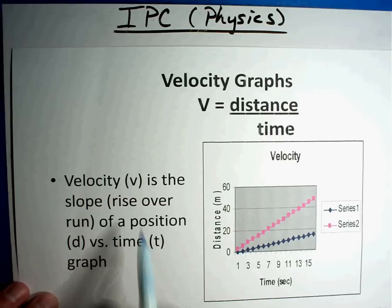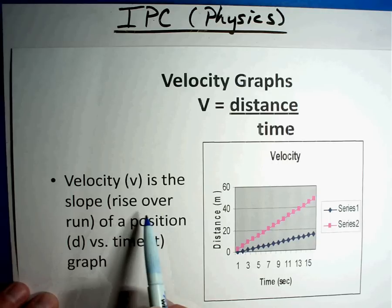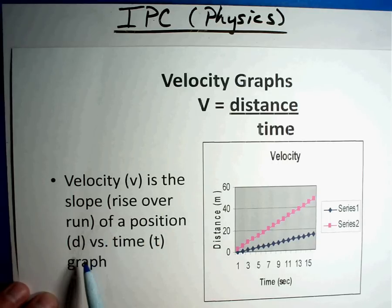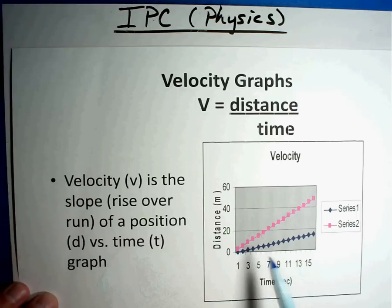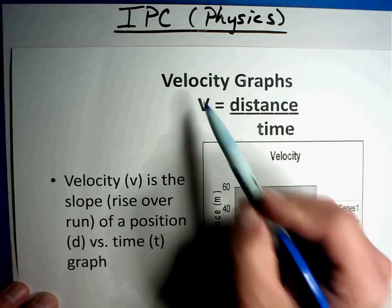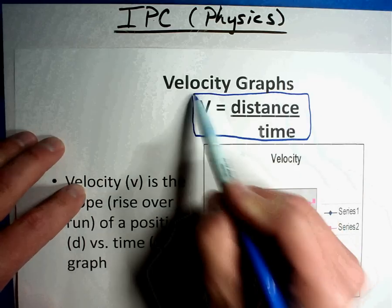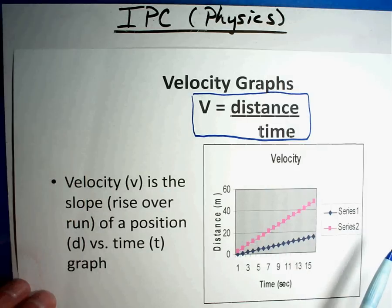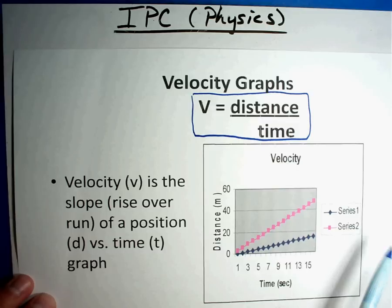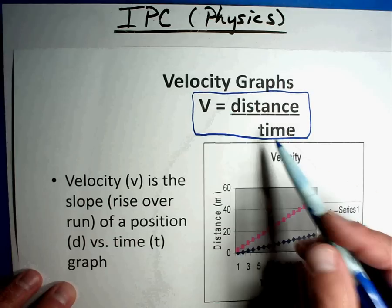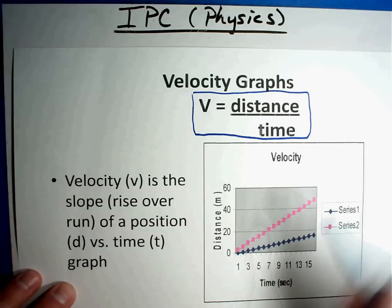Velocity, which is letter V, is the slope — remember from your math class, rise over run — of a position versus time graph. You'll notice in this picture that you have distance and time. Make sure you write this formula down. This is one of the formulas off the formula chart they give you on the TAKS test: V equals velocity equals distance divided by time.